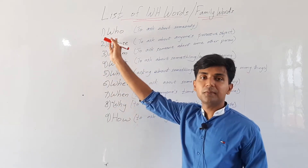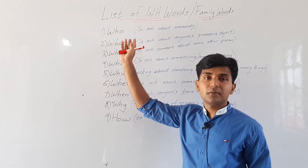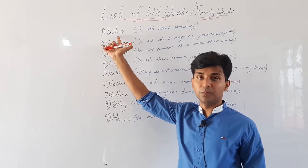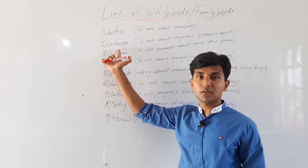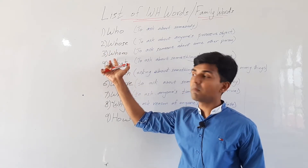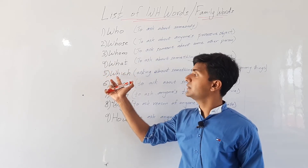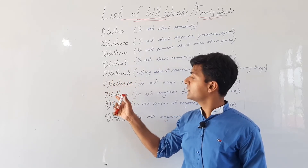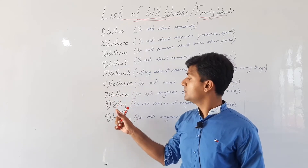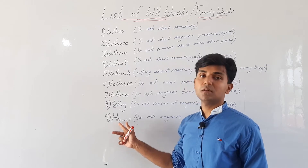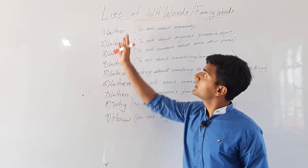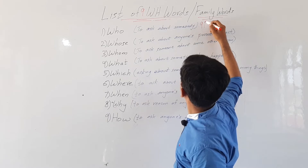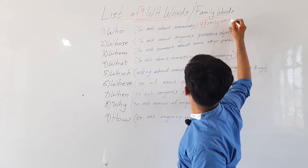Here are the written names of WH words. I have written a list of WH words that are also known as family words. They are: who, whose, whom, what, which, where, when, why, and how. So there are nine WH words, also called nine family words.